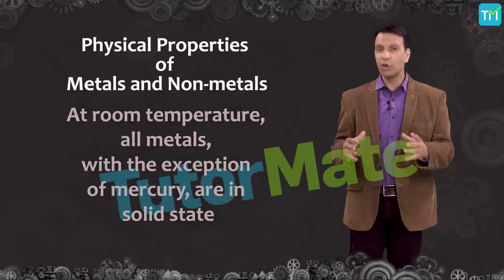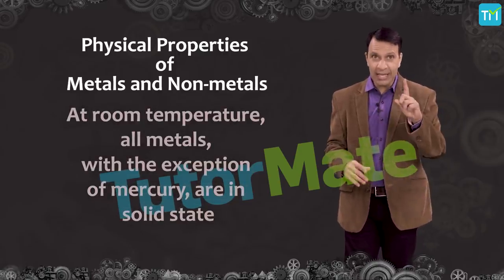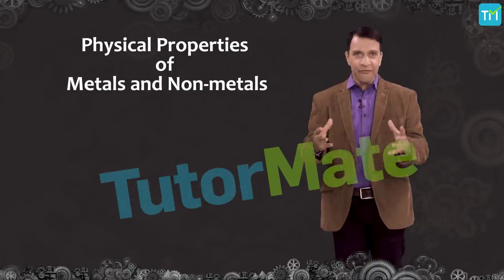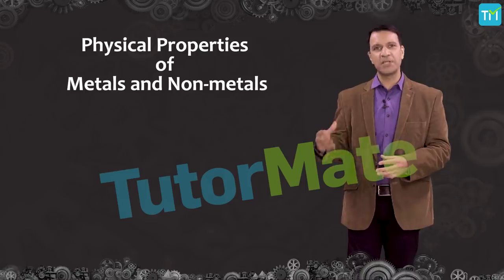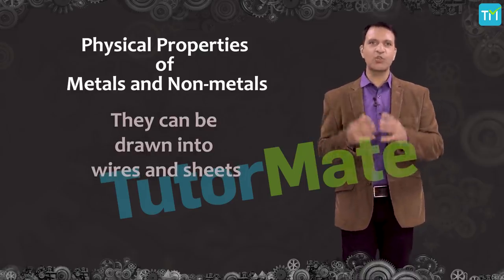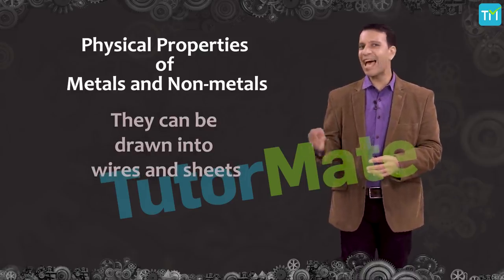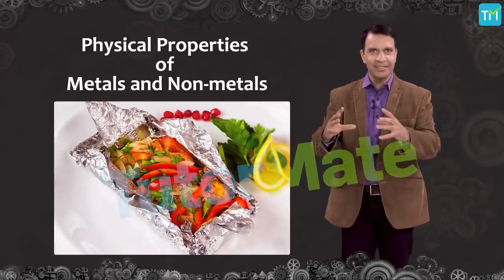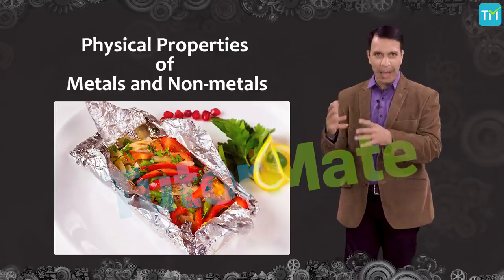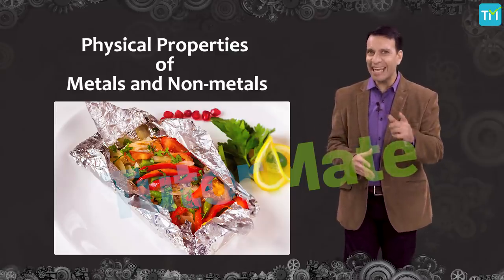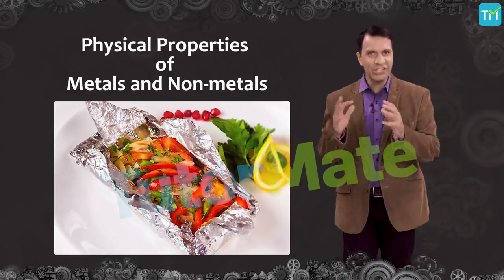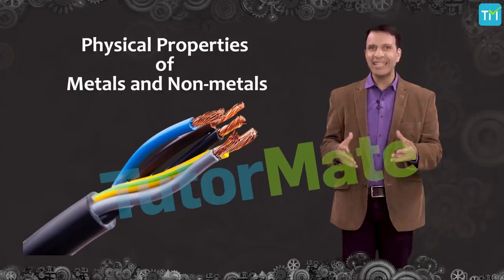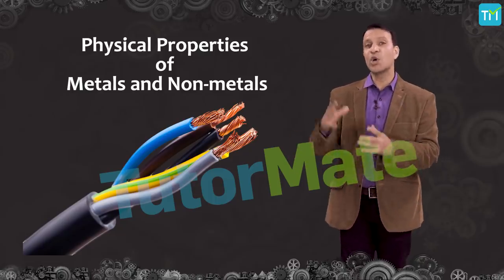At room temperature, all metals, with the exception of mercury, are in solid state. And if they are subjected to high temperatures and other specific treatments, they can be drawn into wires and sheets. For example, you must have seen the aluminium foil that your mom uses to wrap your sandwiches in — that is a metal drawn into a thin sheet. You must have also seen electrical wires — that is metal in its wire form.